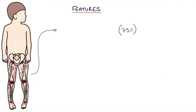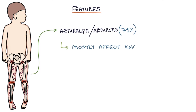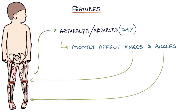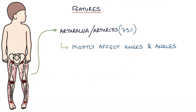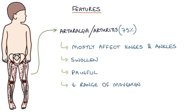75% of patients with HSP develop arthralgia or arthritis, mostly affecting the knees and ankles. The joints can become swollen and painful with reduced range of movement.